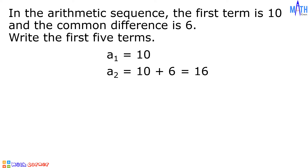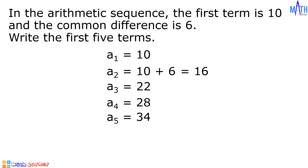To determine the third term, we will add the common difference to the second term. 16 plus 6 is equal to 22. To determine a sub 4, we will add the common difference to a sub 3. 22 plus 6 is equal to 28. A sub 5 is equal to 34. And the first 5 terms are 10, 16, 22, 28, and 34.